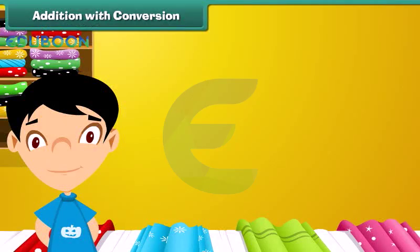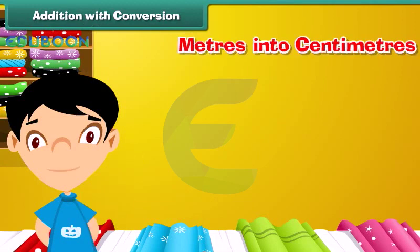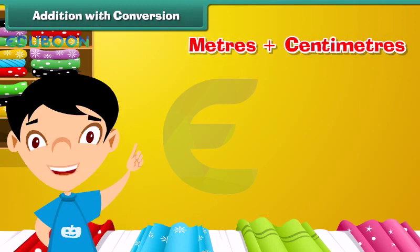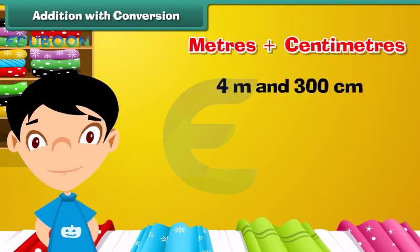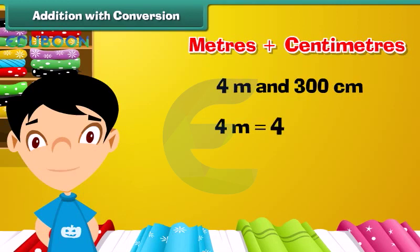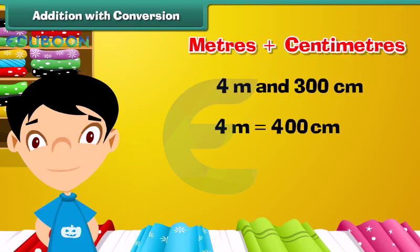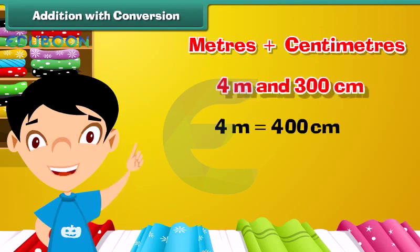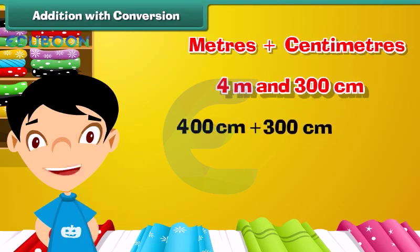Addition with conversion. Now that we know how to convert meters into centimeters, let us learn to add meters and centimeters. Let us add 4 meters and 300 centimeters. Let us first convert meters into centimeters. 4 meters is equal to 4 into 100 centimeters, which equals 400 centimeters. So, 4 meters plus 300 centimeters equals 400 centimeters plus 300 centimeters, which equals 700 centimeters.